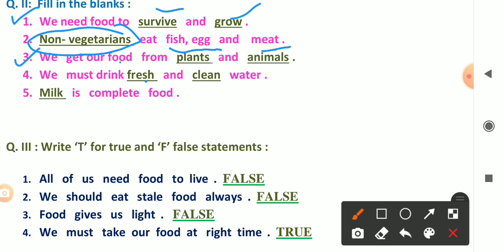Number three: we get our food from plants and animals. Number four: we must drink fresh and clean water. Fresh means taza and clean means saaf. Number five: milk is complete food. Milk is poorna ahar.